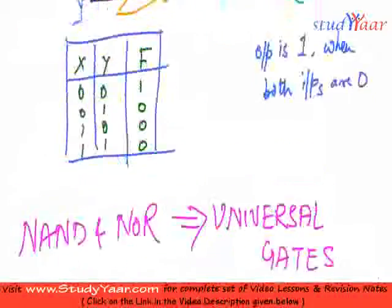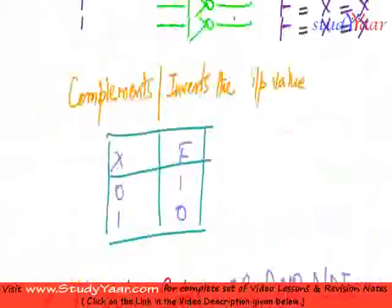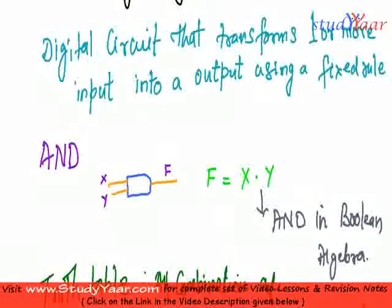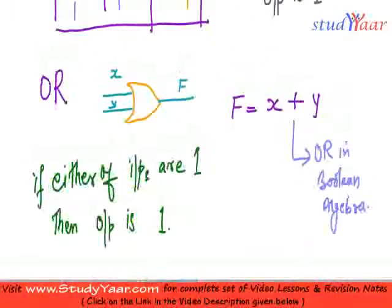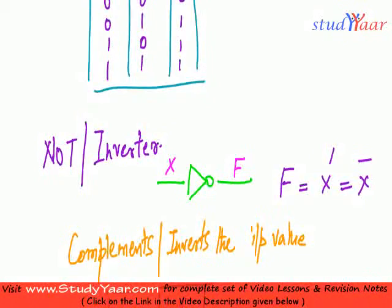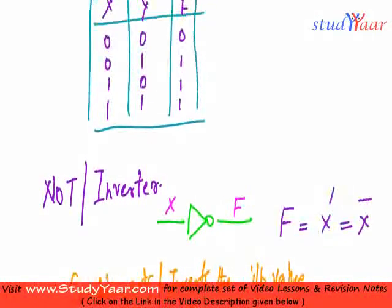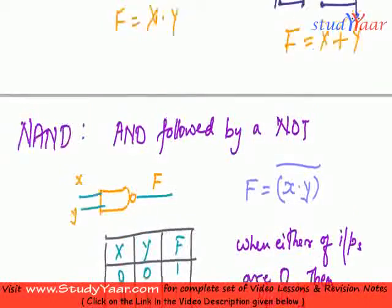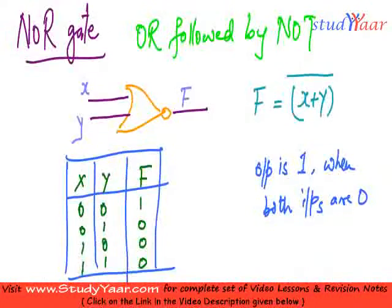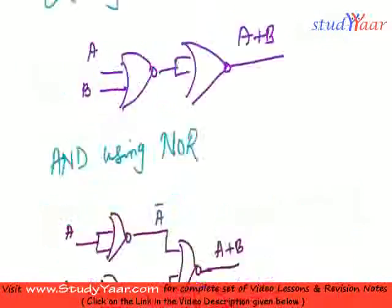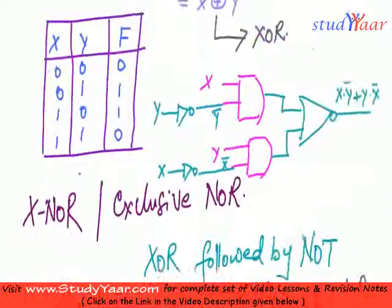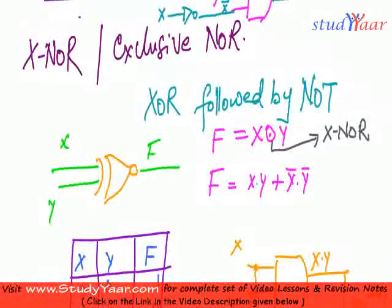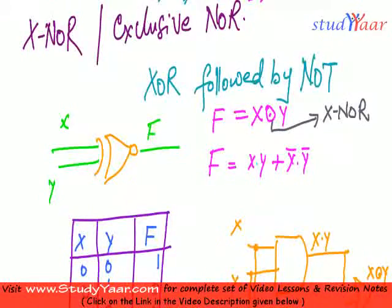All of these gates that we have studied is an operation. So we have an AND operation. We have an OR operation. We have a NOT or inverter or complement operation. Then we have either NAND operation or NOR operation or XOR operation or XNOR operation. Every gate in Boolean...